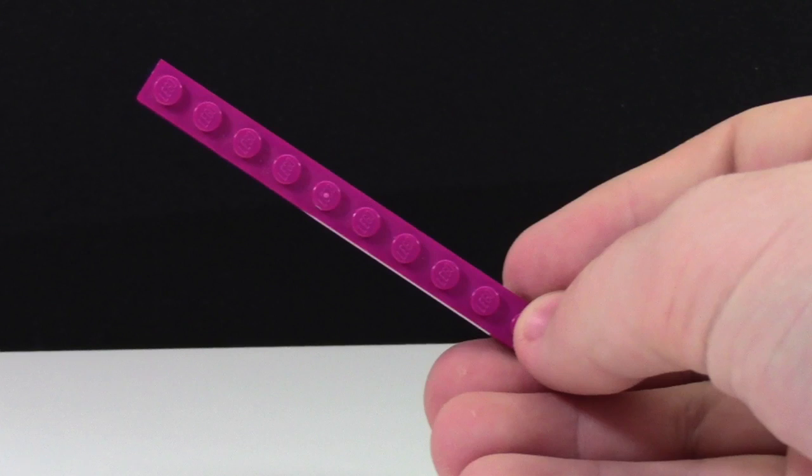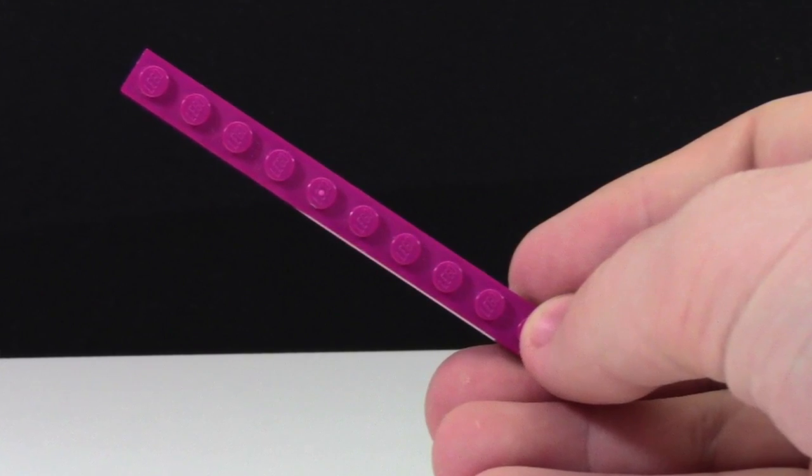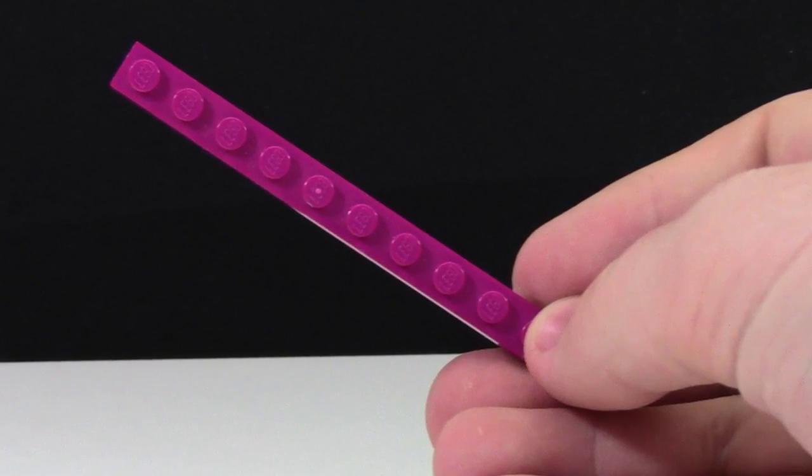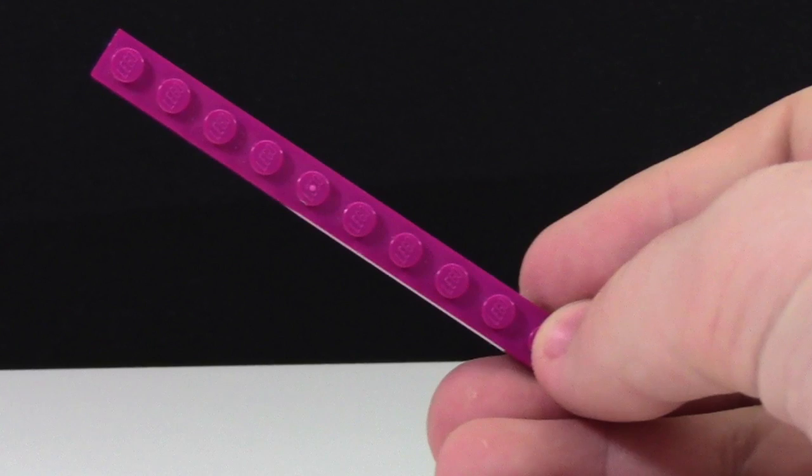First up you'll of course need some brick separators. You'll need some kind of 1x1 LEGO plate. I'm using a 1x10 plate because I have three brick separators but you could use whatever size you want as well as any color you want. Like in my case I'm using a color that I have a lot of.